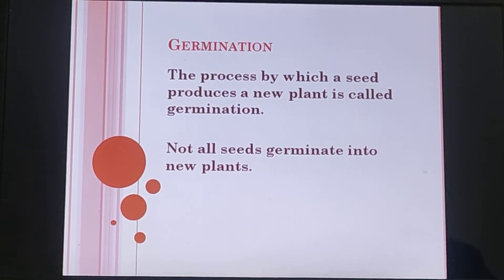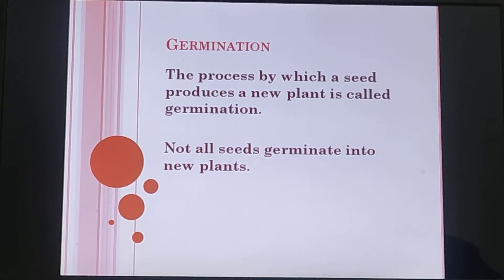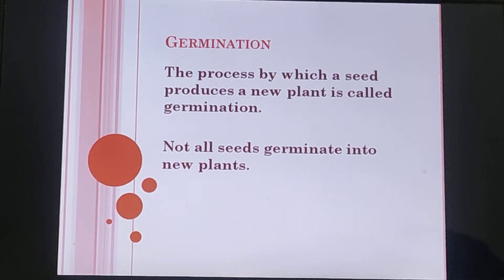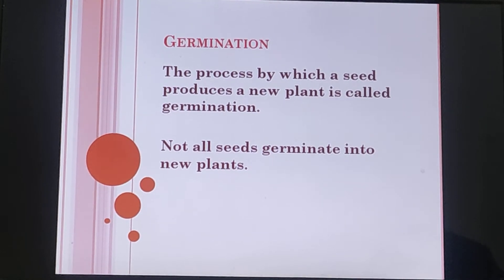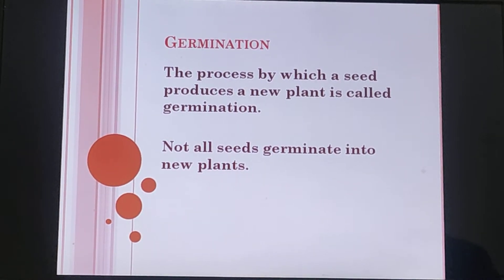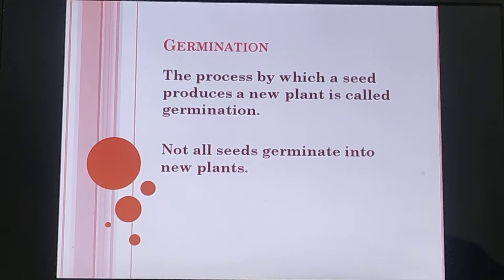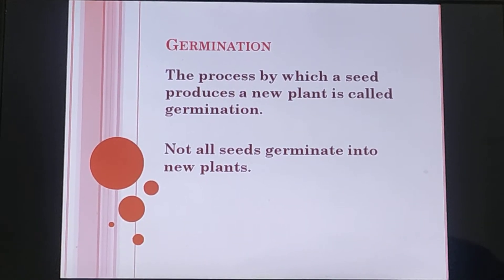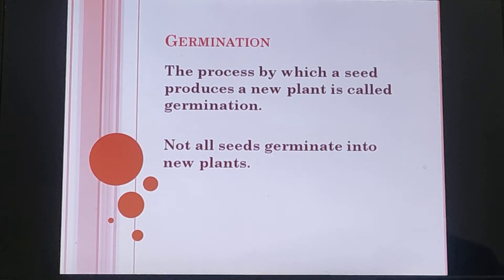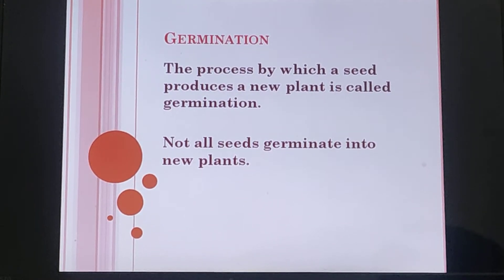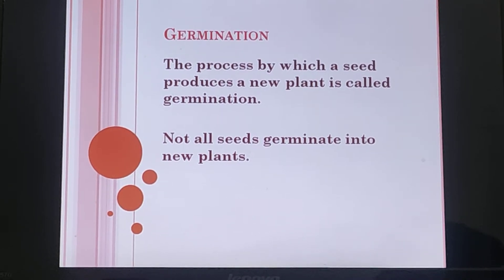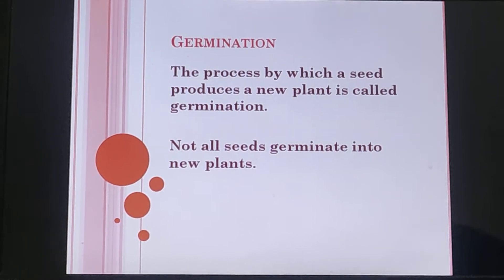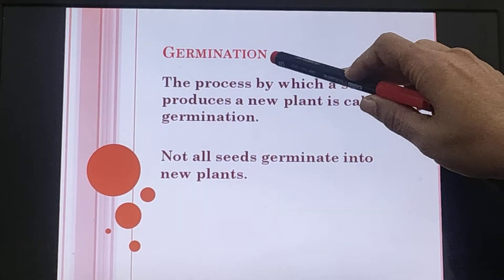Children, in your last class you have already studied about the structure of a seed — it has some external and internal parts. Now, if you want to convert that seed into a new plant, you need to put it into the soil and provide certain essential conditions which will help it turn into a new plant. So the process by which a seed produces a new plant, or a seed changes into a new plant, is called germination.